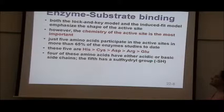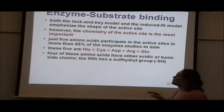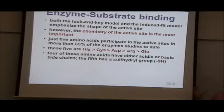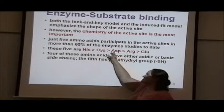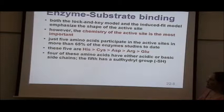Continuing with enzyme-substrate binding and the chemical properties of the enzyme active site: while shape is important, chemistry is probably more important. Studies show that 65% of enzymes with known structures have one of five specific amino acids in the active site. What makes those five amino acids special?